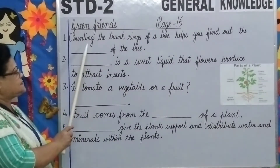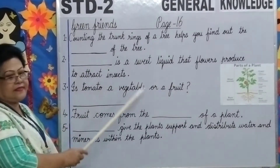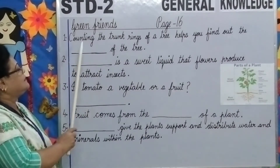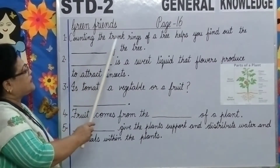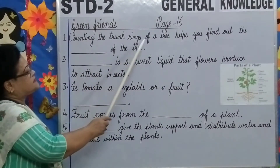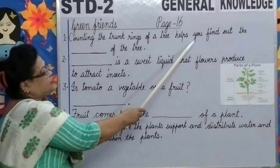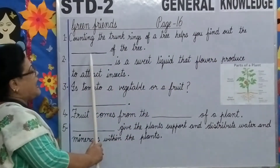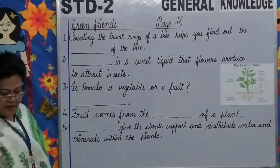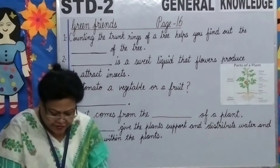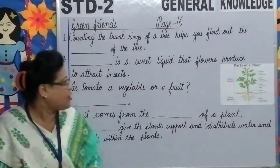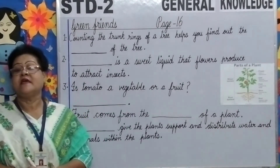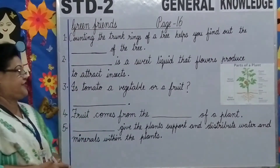Fill in the blanks to complete the sentences. Number 1: Counting the trunk rings of a tree helps you find out the blank of the tree. Counting the trunk rings of a tree helps us to find out the age of a tree.